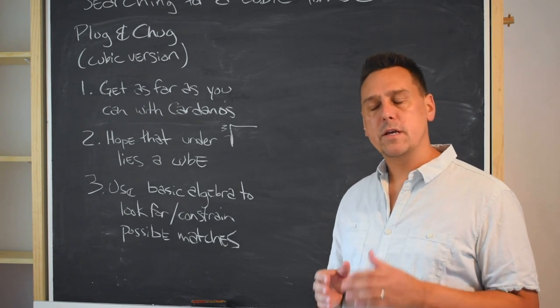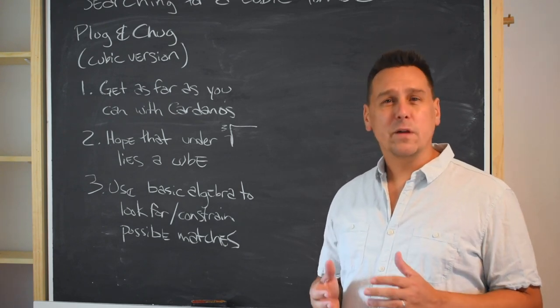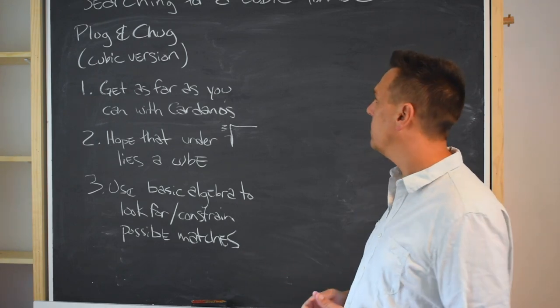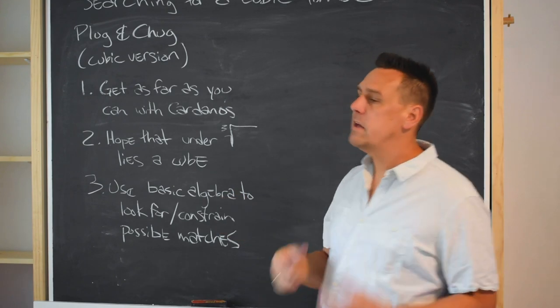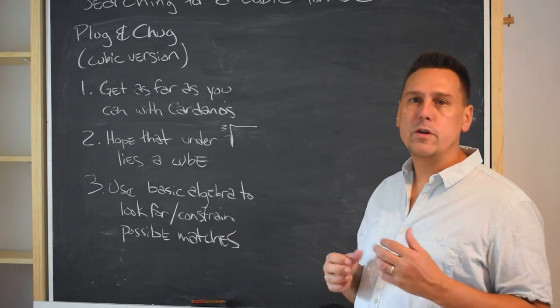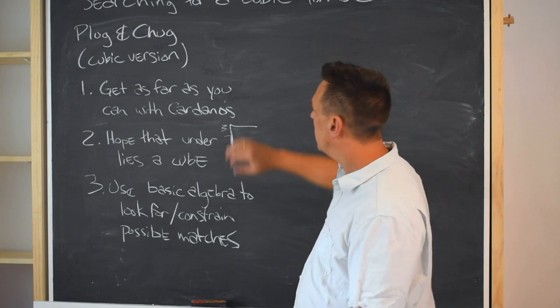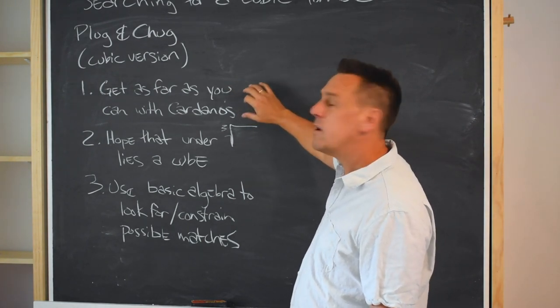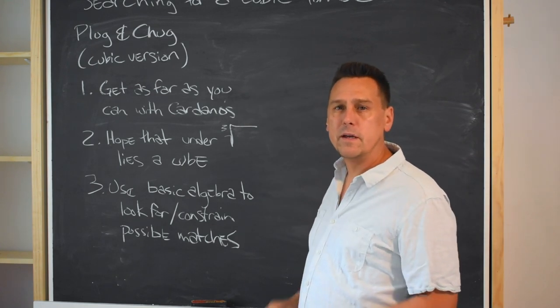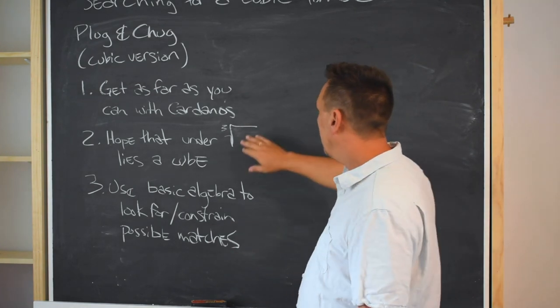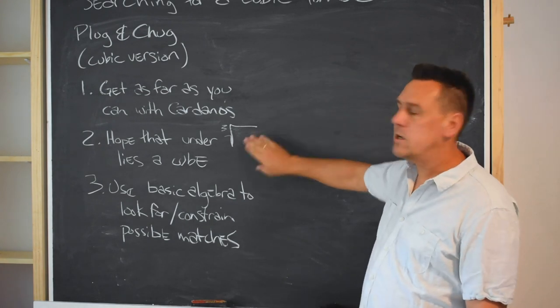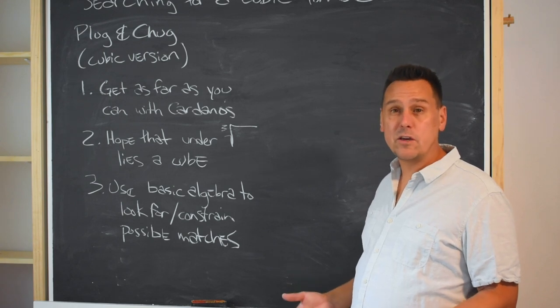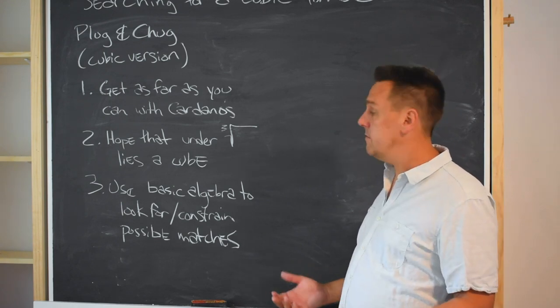So what I wanted to do in this section is to see how lucky we got. So to start with, I wrote down the basic strategy that came out of what we did last time. So this is Plug and Chug in the cubic version, sort of the analog of what you do with the quadratic formula in school usually. So we've got Cardano's formula, and what we're going to do is with our cubic, we're going to get as far as we can with Cardano's formula until the arithmetic starts getting really hard. And then we're going to end up with some sort of mess underneath the cube root, and we're just going to hope that whatever's under there is already a cube so that we can take its cube root. That makes it easy if that works out.